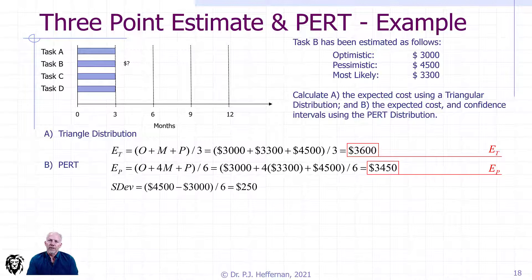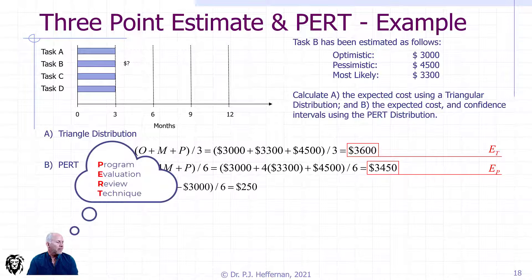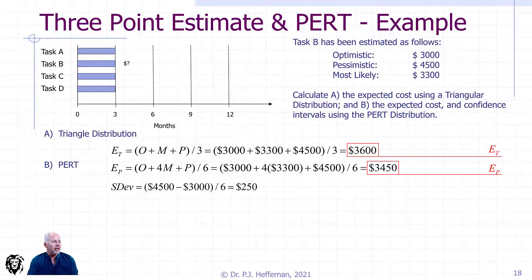Because we've used the PERT, the Program Estimate and Review Technique, we can also calculate the standard deviation. We take our pessimistic, subtract our optimistic, divide by six, and we see that we have a standard deviation of $250.